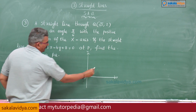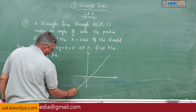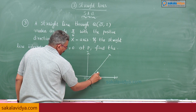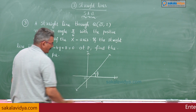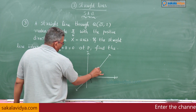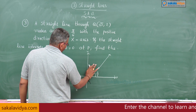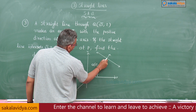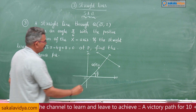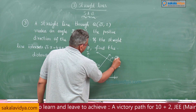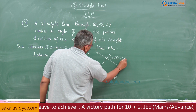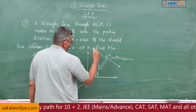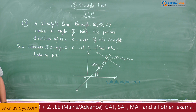Suppose the line is making an angle like this — it is a line. What is the angle? π/6 with the positive x-axis direction. There is a point Q(√3, 2), and it cuts another line. That line is √3x minus 4y plus 8 equals 0 at P.